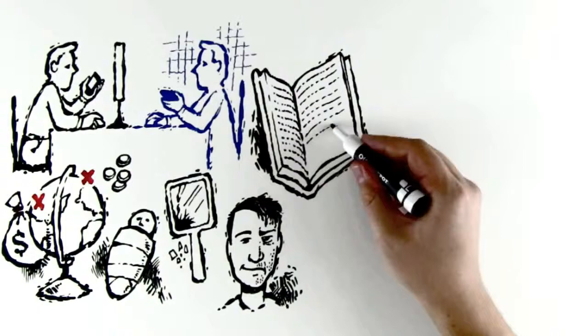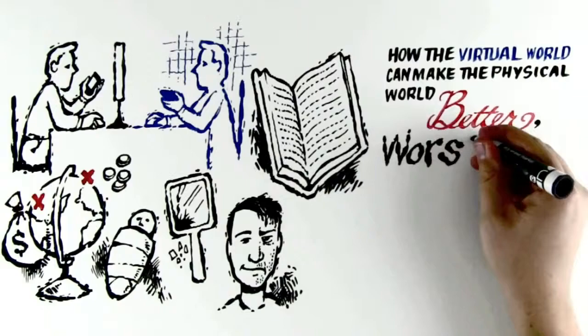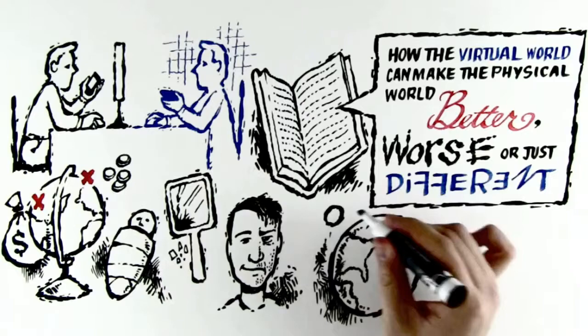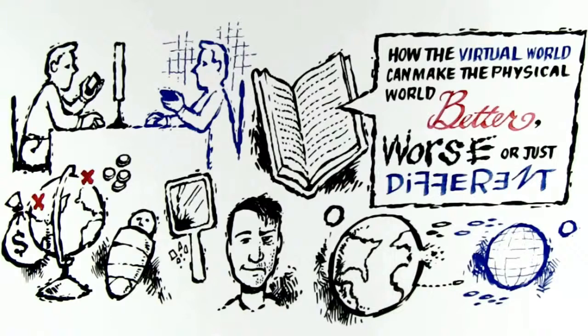In this book, we aim to demonstrate ways in which the virtual world can make the physical world better, worse, or just different. Sometimes these worlds will constrain each other, sometimes they will clash, sometimes they will intensify, accelerate, and exacerbate phenomena in the other world, so that a difference in degree will become a difference in kind.